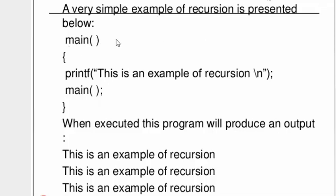We can see only one function — main — is involved, and it is calling itself again and again. This particular scenario is direct recursion because only one function is involved and it is calling itself. The output will be the message 'This is an example of recursion' printed repeatedly: the message displays, main is called again, the message prints again, and it goes on forever.